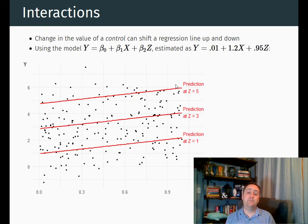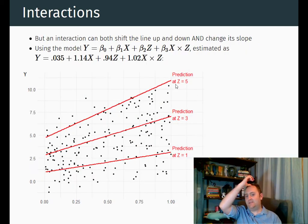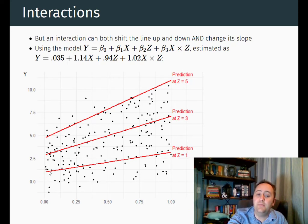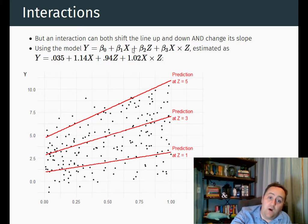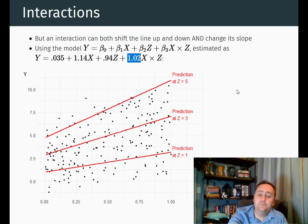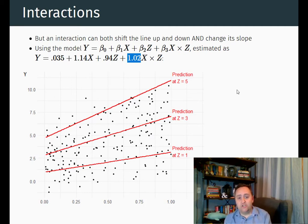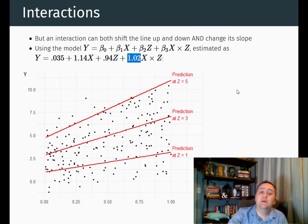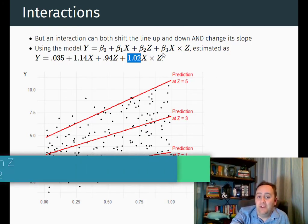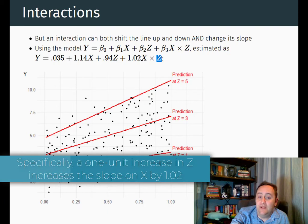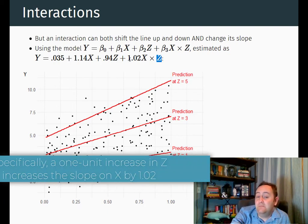An interaction term says that's not enough flexibility. I don't just want to move the line up and down — I also want the slope to be different depending on the value of z. So the slope relationship between x and y can be different depending on the value of z. Not just does the line move up as we go from z equals one to three to five — it also gets steeper. That's coming from this regression equation where I'm regressing y on x, z, and x times z. The coefficient of 1.02 on the interaction term tells me that as z gets bigger, the slope on x is also getting bigger.